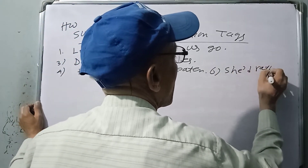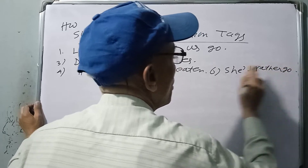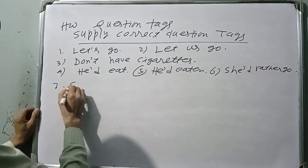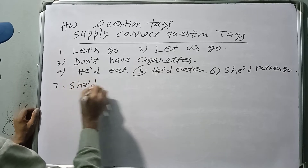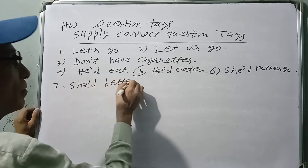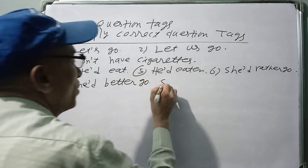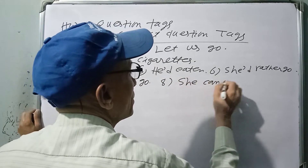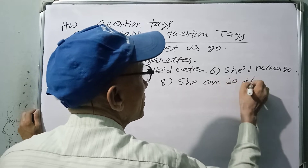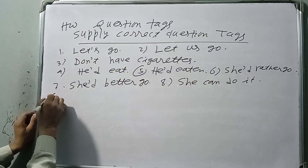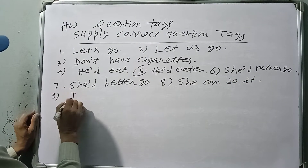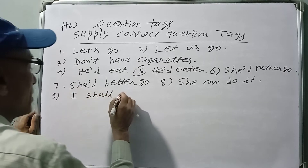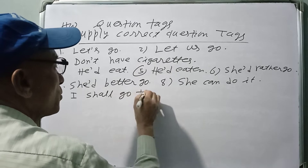For 'sit rather go' — 'would rather' — remember 'would rather' takes V3. In the same way, 'had better go' — 'hadn't she.' 'She can do it' — 'can't she.' 'I shall go tomorrow' — the tag is 'shan't I.' These are the rules for would rather, had better, can, and shall in question tags.